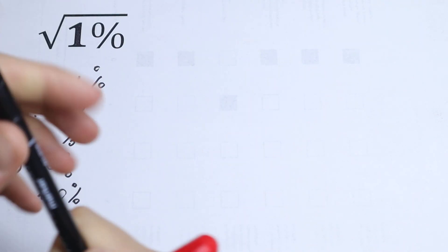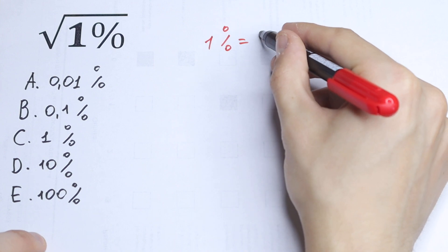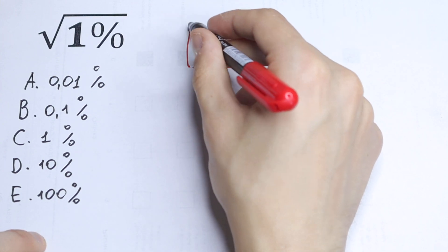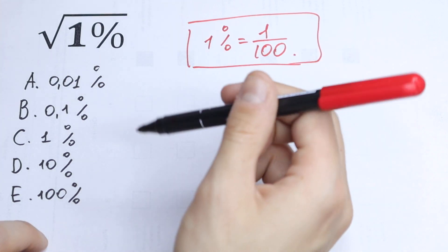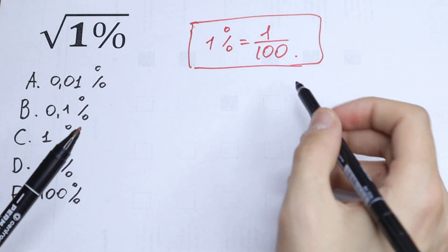First of all, we need to know that 1% is equal to 1 part out of 100. So this is a rule - doesn't matter if you have 2%, 3%, you simplify using this trick. We have 1% equal to 1 over 100.